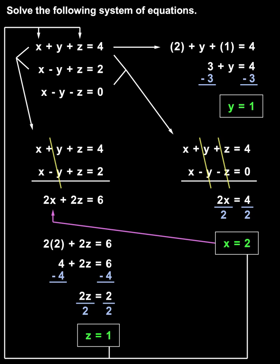Finally, we write our answer as the ordered triple (x, y, z), which is (2, 1, 1).